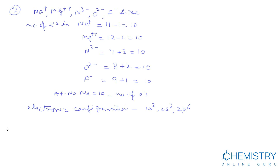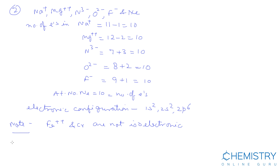One important point: Fe²⁺ (ferrous ion) and chromium are NOT isoelectronic. The number of electrons is the same in both Fe²⁺ and chromium, but they are not isoelectronic because the electronic configuration is different. The atomic number of Fe is 26; its configuration is 1s² 2s² 2p⁶ 3s² 3p⁶ 4s² 3d⁶. For d-block elements, electrons are first removed from ns, then (n−1)d.